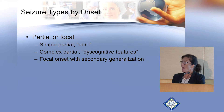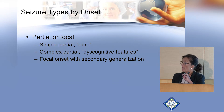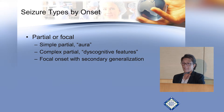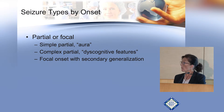The other type is complex partial — now called focal onset with discognitive features — where the person does not have full control of their awareness. They may act like a robot and pick at things. This is different from the generalized onset of absence, or what some call petit mal seizures. Finally, you can have a focal onset with secondary generalization into a generalized tonic-clonic convulsion, which can spread so quickly that you don't even recognize it as a focal onset.